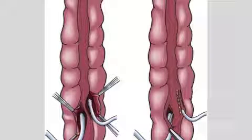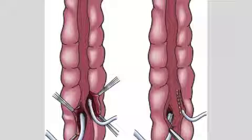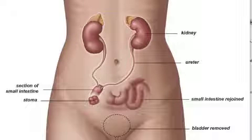To create an Ileal Conduit, a segment of small intestine will be surgically removed to create a diversion for urine to pass through. The ureters will be sutured to the piece of intestine, creating a diversion for urine flow. The piece of intestine will be sutured closed at one end, and the other end will become the stoma outside the body, which is sutured to the abdomen.